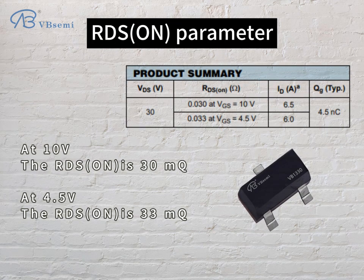RDS-ON parameter: at 10V, the RDS-ON is 30mΩ; at 4.5V, the RDS-ON is 33mΩ.